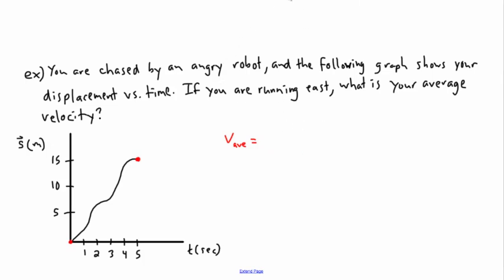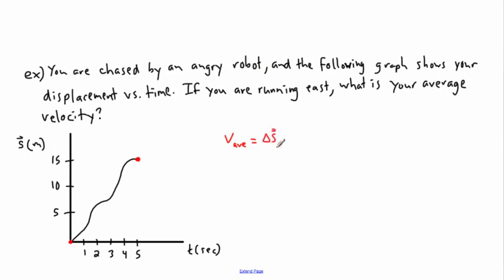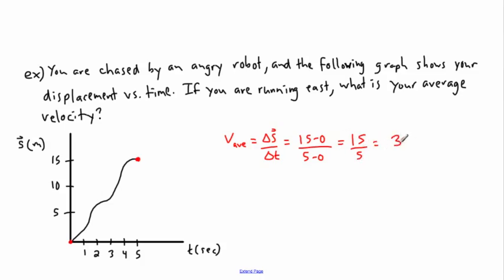Technically, you could write it as 15 minus 0 divided by the change in time. It helps on a test to write out the equation: change in displacement over change in time. My end displacement is 15 meters east, and zero at the start, so the change is 15 minus 0. My time goes from 5 minus 0, so this is just 15 divided by 5, which equals 3.